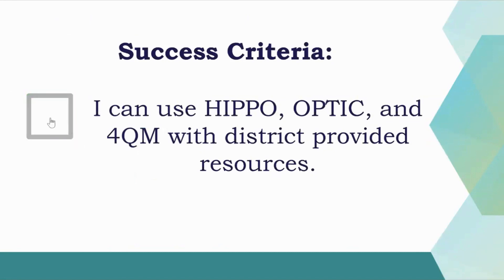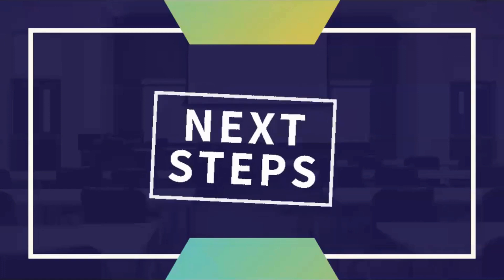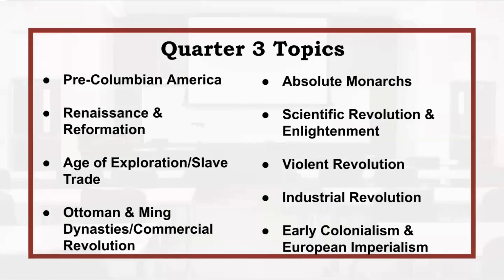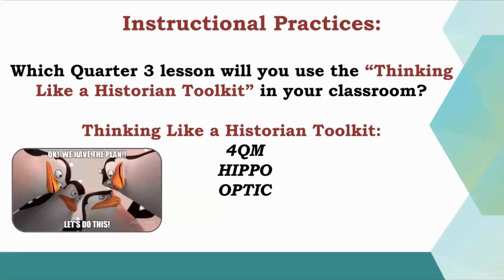We have now successfully met the use of HIPPO, OPTIC, and 4QM with district-provided resources. Let's go into our next step: implementing the practice. I'm going to ask you to do this almost like a mini PLC — it would be great if you can collaborate with a peer or take this back to your campus. Look at Quarter Three topics other than the Industrial Revolution and select one topic you'd like to utilize with any one of these Thinking Like a Historian tools.